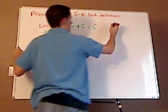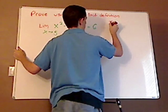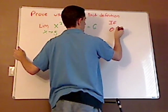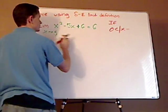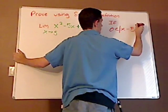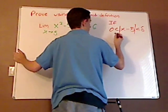so to do this, we have our given statement: if 0 < absolute value of x minus the A, which is 5, is less than delta,